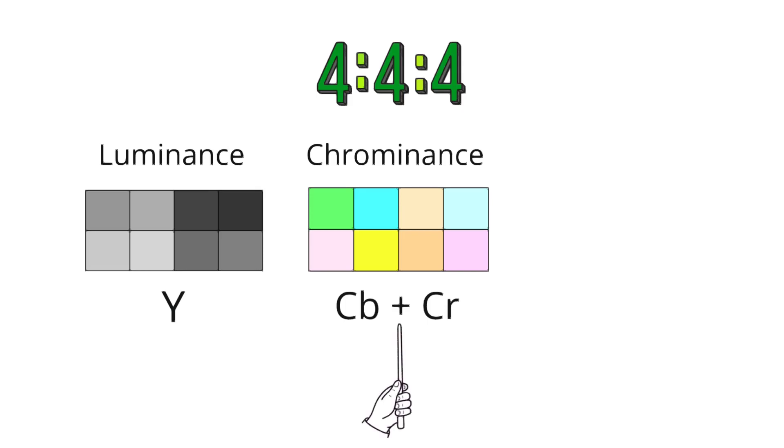In the middle, there are two color grids labeled CB and CR, which represent the chrominance components. CB represents the blue difference chroma component, and CR represents the red difference chroma component. These components carry the color information of the image and are often displayed with a color tint for illustration purposes.